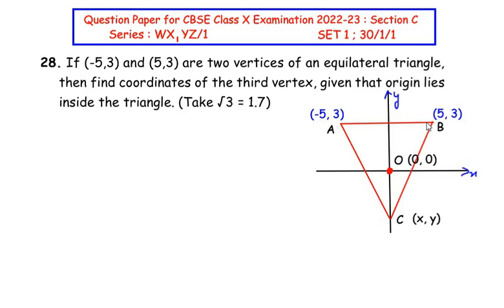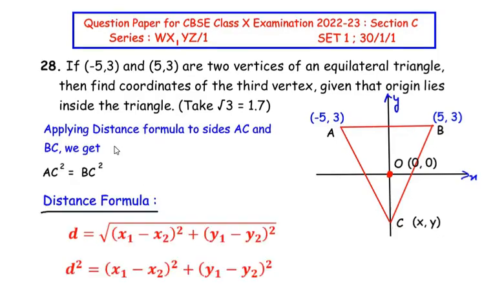Since this is an equilateral triangle, the length of all sides are equal. To find the coordinates of the third vertex C, we use the distance formula for sides AC and BC. We can write AC² = BC². The distance formula is D = √[(x1 - x2)² + (y1 - y2)²], so D² = (x1 - x2)² + (y1 - y2)². We need AC² and BC² both in this form.